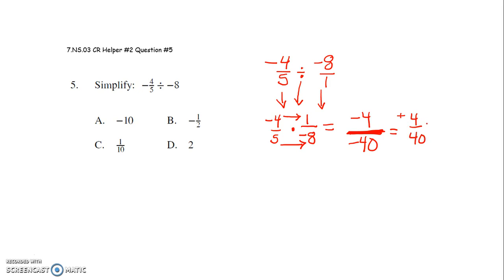Now I can simplify this fraction to write it in simplest form. I can divide my numerator and my denominator by 4. 4 divided by 4 is 1. 40 divided by 4 is 10.